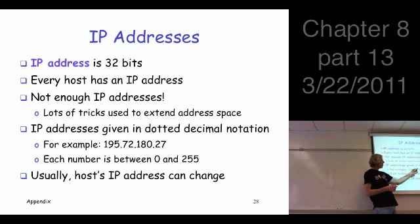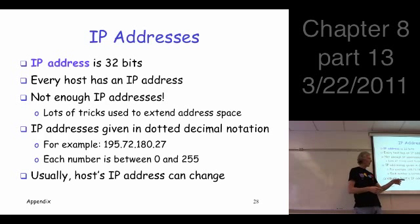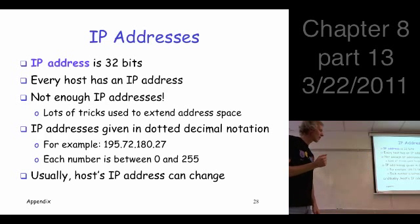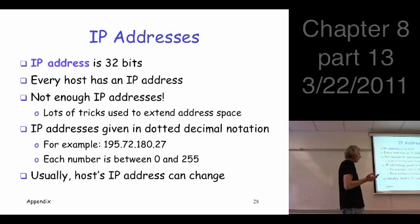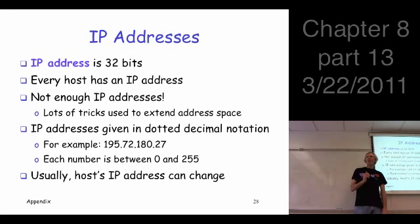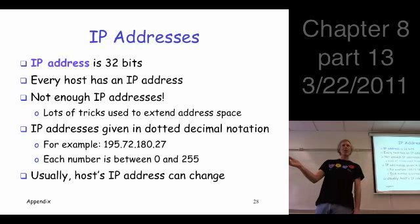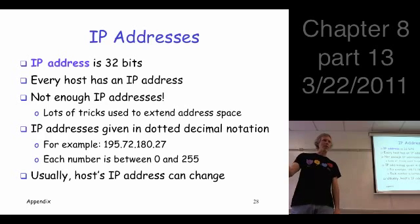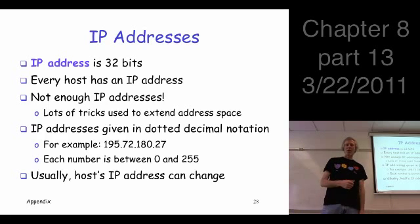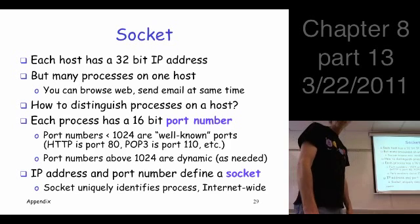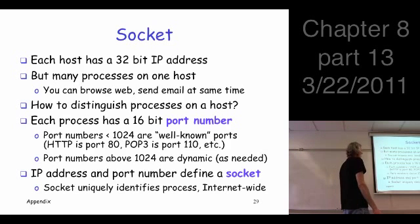Now, the IP addresses, 32 bits, are always given in so-called dotted decimal notation. So there's four bytes. That's really all that's going on here. But they give it in decimal. Each of the four bytes is given as a decimal number between zero and 255. Now, for most people, most applications, your IP address can change. So you get on the network, you're given an IP address for that interaction. Get on later, it's a different IP address.